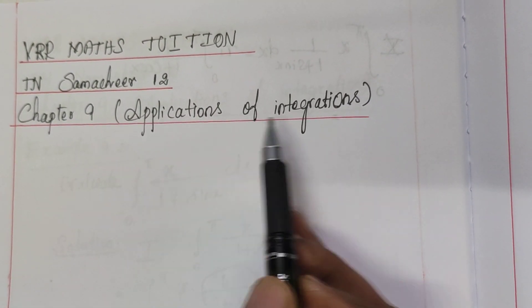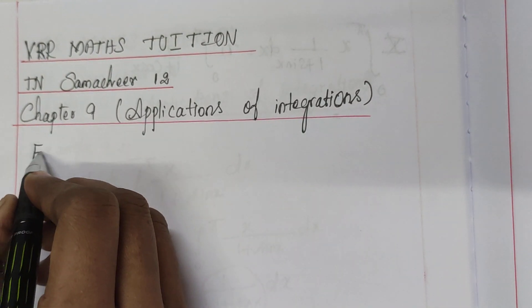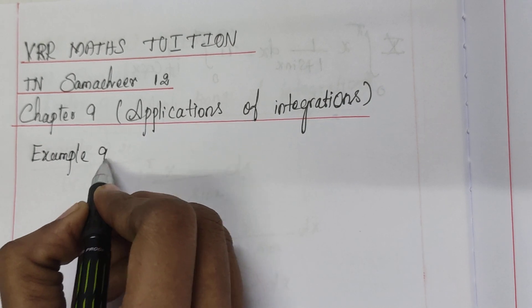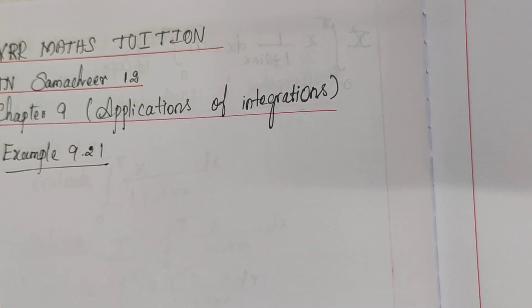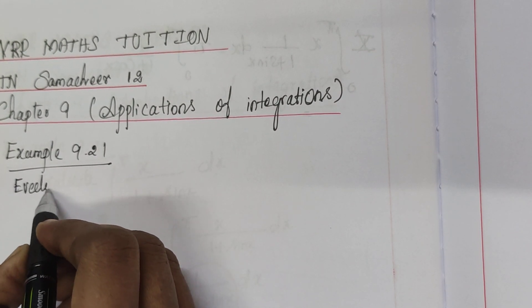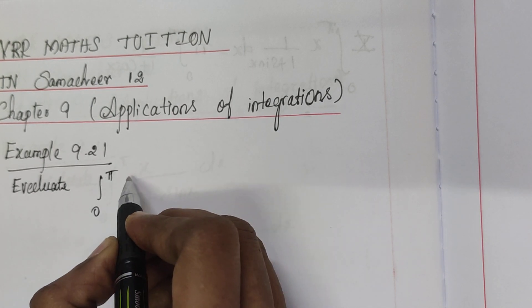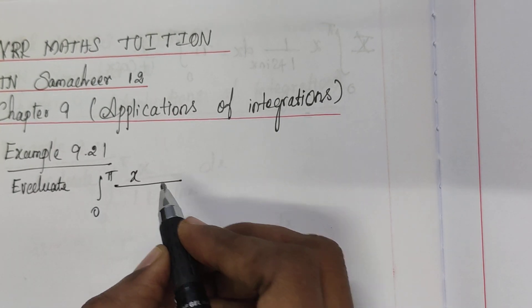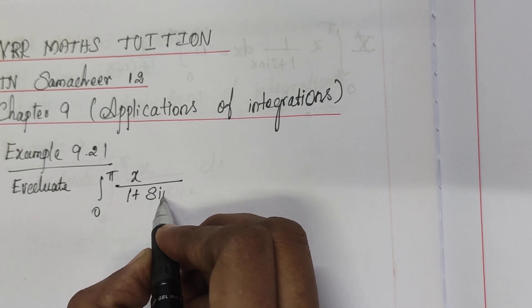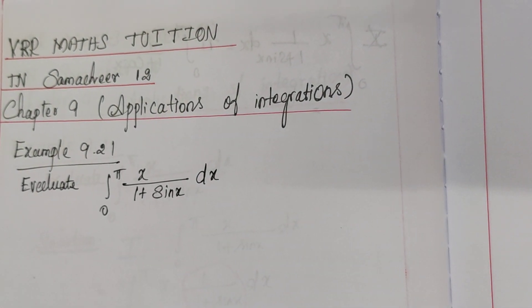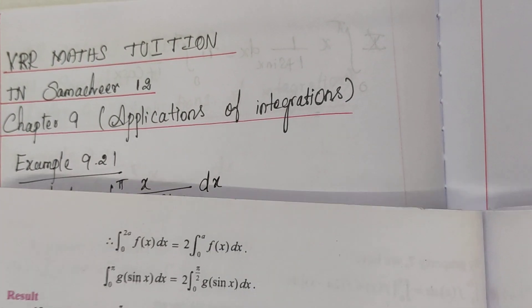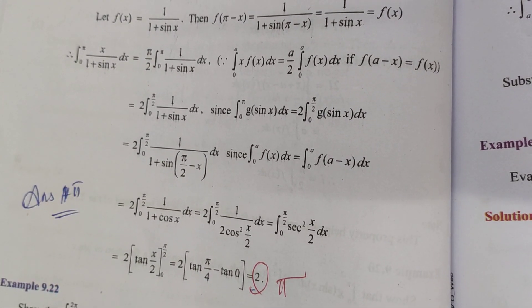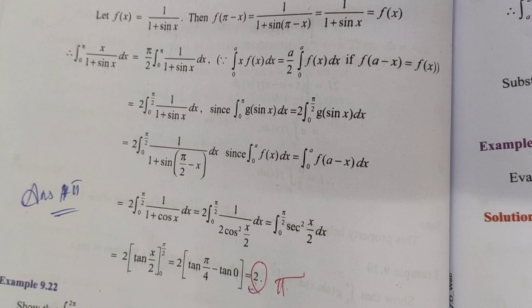Chapter 9: Applications of Integration, Example 9.21. Evaluate the integral from 0 to π of x divided by (1 + sin x) dx. The answer for this question is π. Note that π/2 is a wrong answer — the correct answer is π.